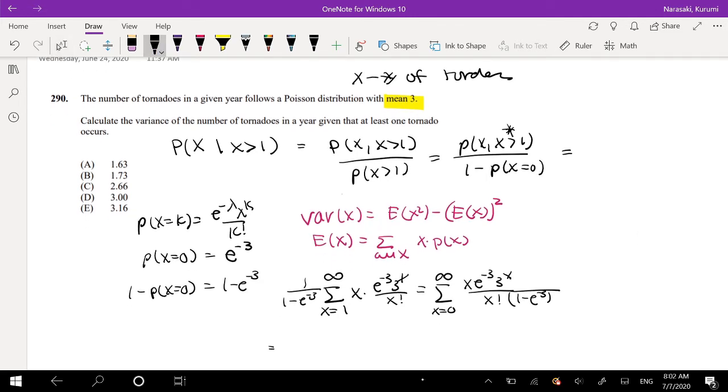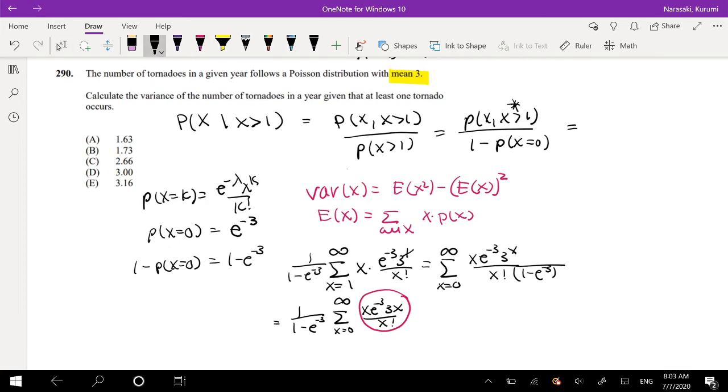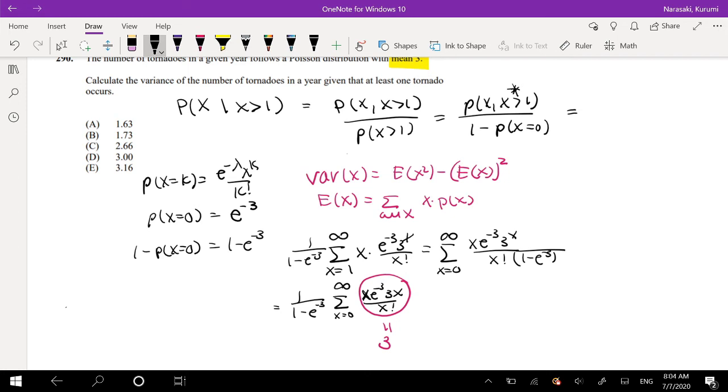This could be further simplified, I'm going to take that 1 minus E to the negative 3 outside, and this is equal to X E to the negative 3, 3 to the X over X factorial. So a big shout-out to Mark and E Iceman, the YouTube channel, because he helped me figure out that this value right here, the red that I just circled right here, is just a Poisson distribution, the mean of a Poisson distribution with the mu lambda being equal to 3. This whole red part is just equal to 3, because what is the expected value of a Poisson distribution? Well, that's just equal to the mean, and the mean right here, or the lambda. So this whole red part is actually just equal to 3. So then it equals 3 over 1 minus E to the negative 3.